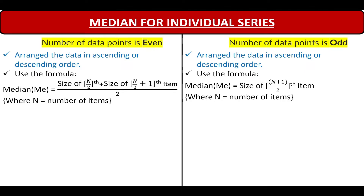In case of an even number of data points, first arrange the data in ascending or descending order. Then use the formula: median equals the size of the (N/2)th item plus the size of the (N/2 + 1)th item, divided by 2. In case of an odd number of data points, the formula is the size of the (N+1)/2 th item.